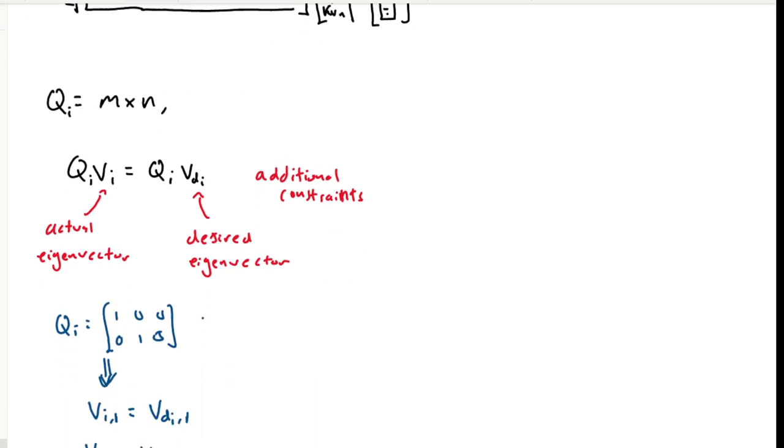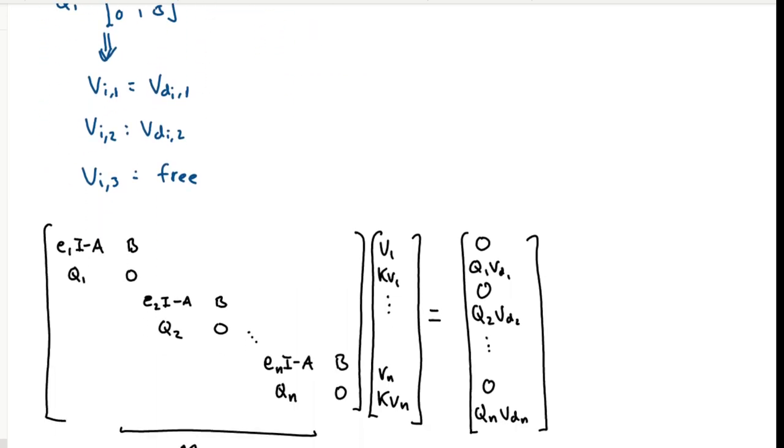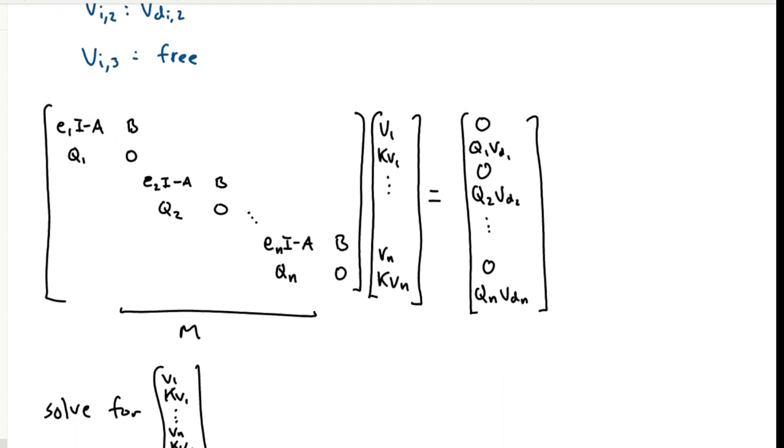Then we can rewrite our equations as follows, inserting these extra rows with the Qs in it, and changing the right side of our equation as well to reflect these desired, Qs times our desired eigenvectors. Our system is now fully constrained, and we can solve for a gain matrix K that additionally puts some constraints on the final eigenstructure.